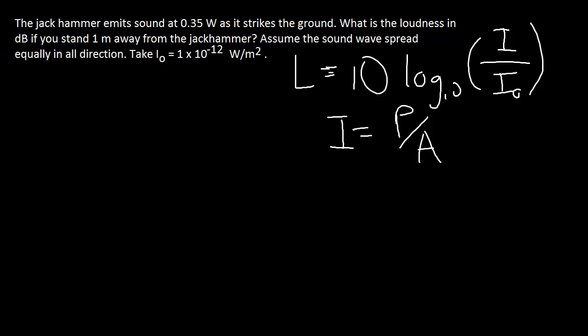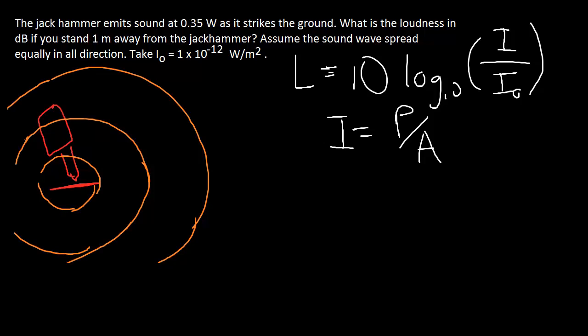Let's say we have a jackhammer here and it hits the ground. It makes noise that's emitted and spread in all directions equally. That's the assumption we're making. The waves spread out in perfect spherical shells, and the area of a perfect spherical shell is 4πr².